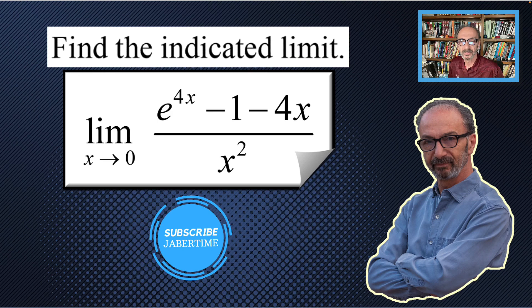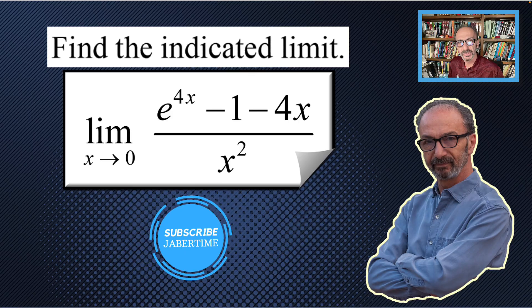Find the indicated limit: the limit of e^(4x) - 1 - 4x all over x² as x approaches zero.